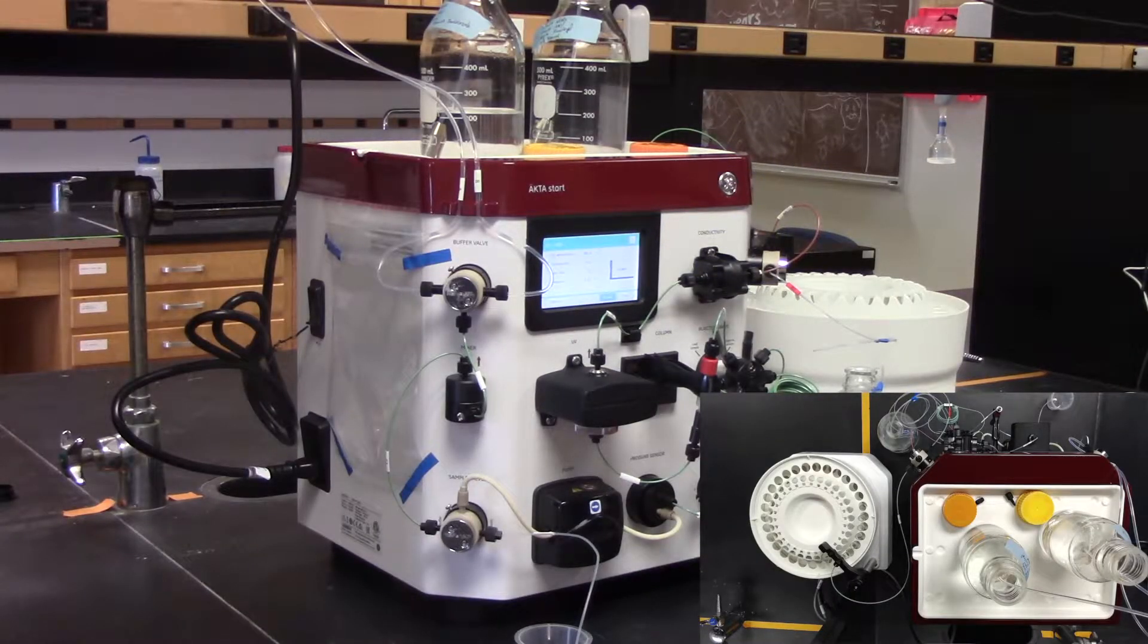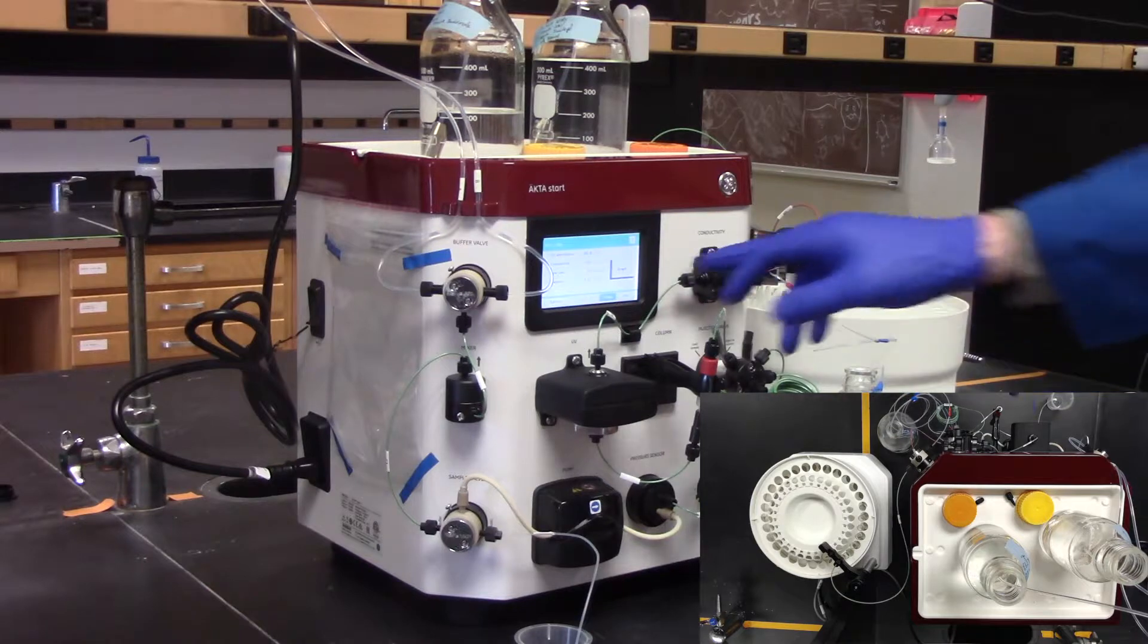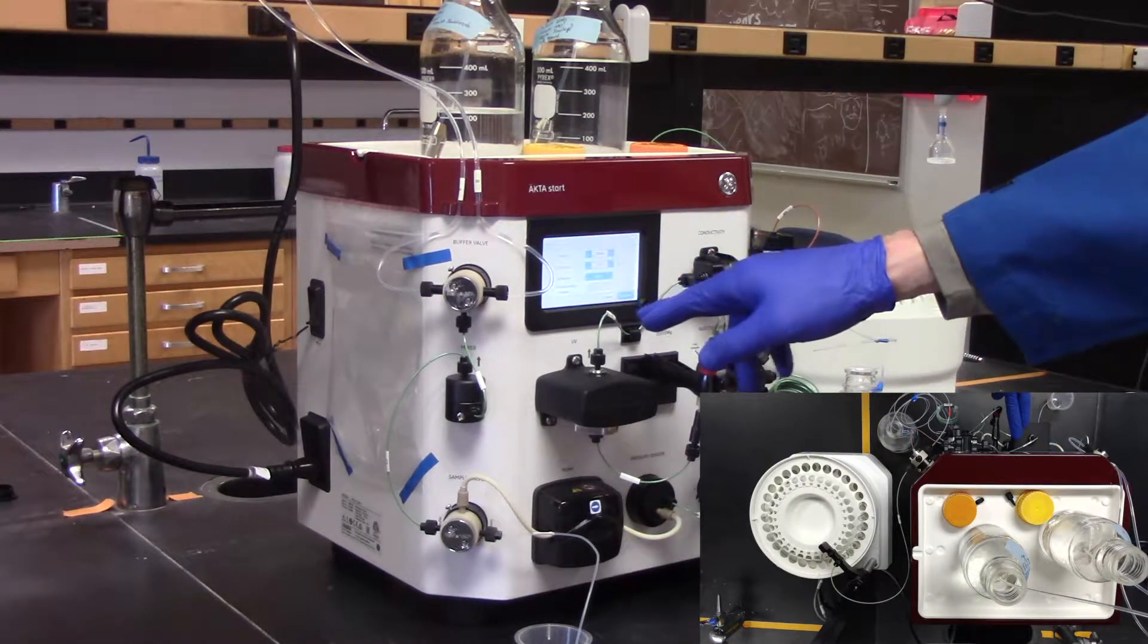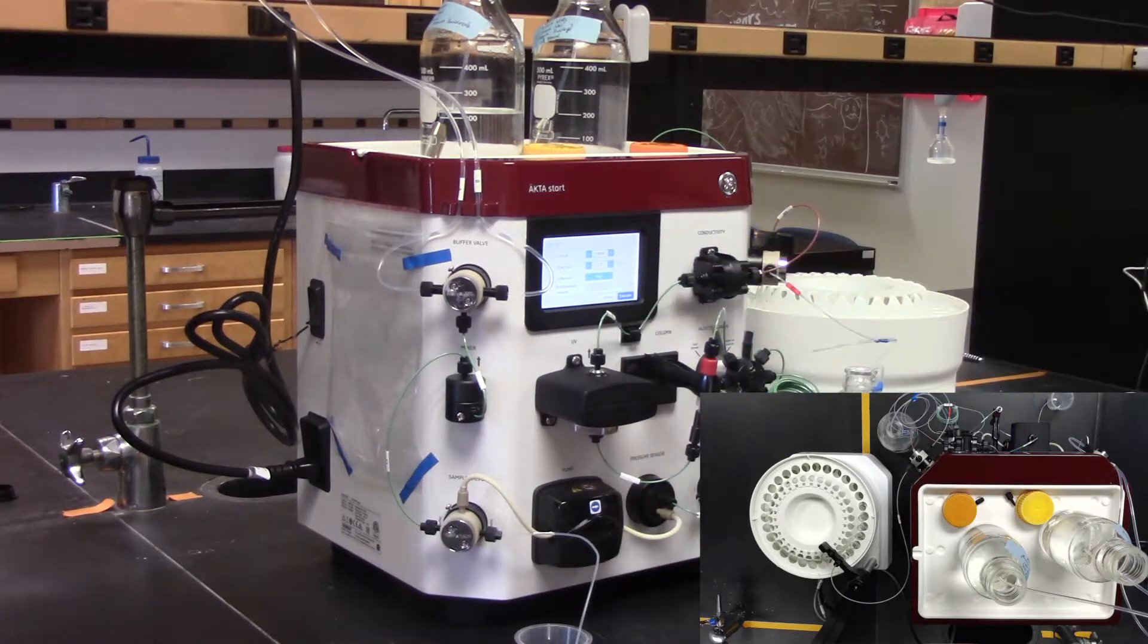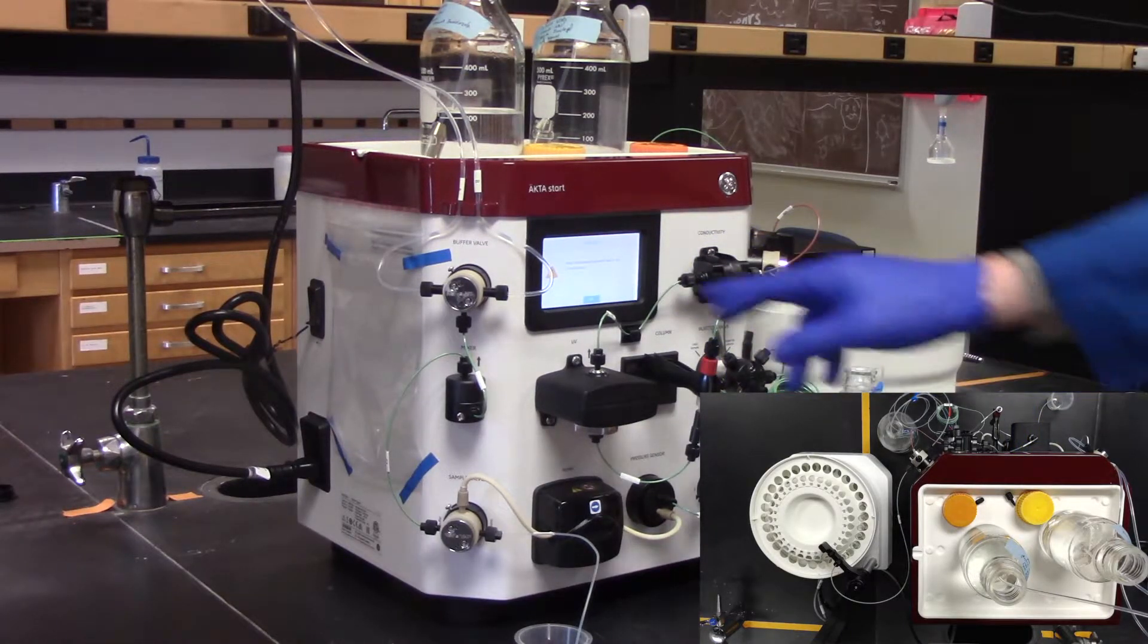To elute your protein from the column, switch your concentration of buffer B to 100%. As you see an increase in absorbance, begin fractionation. Collect anywhere between 3 to 5 mL fractions.